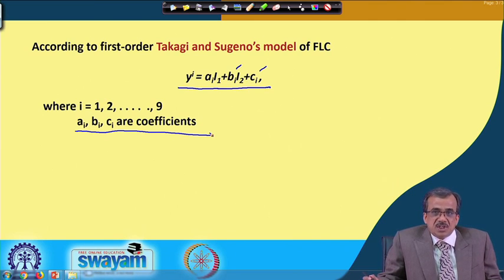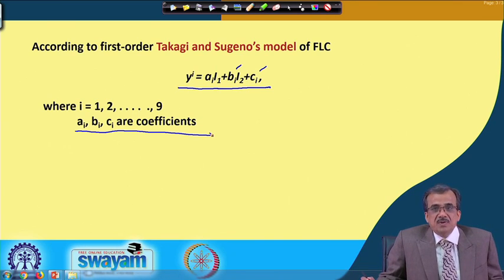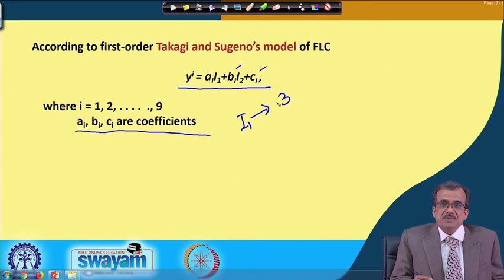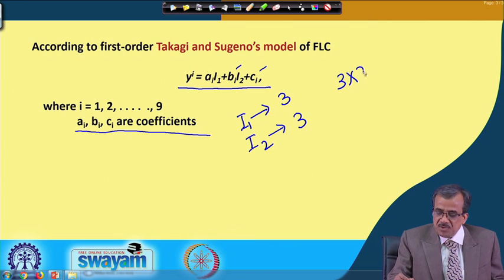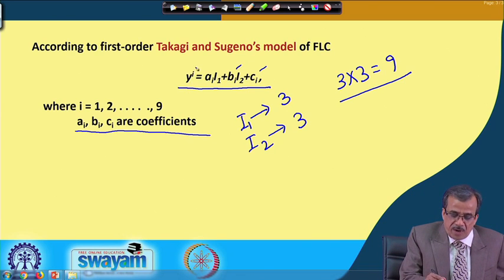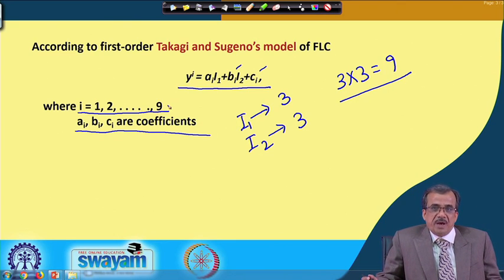We can use the least square error technique to find out the values for ai, bi, and ci. We can also use nature-inspired optimization tools like genetic algorithm to find the optimal values for ai, bi, and ci. For the first input I1, we have considered three linguistic terms, and for the second input I2, we have also considered three linguistic terms. So we have three multiplied by three, giving nine possible combinations of the input parameters, which means we have got nine rules.